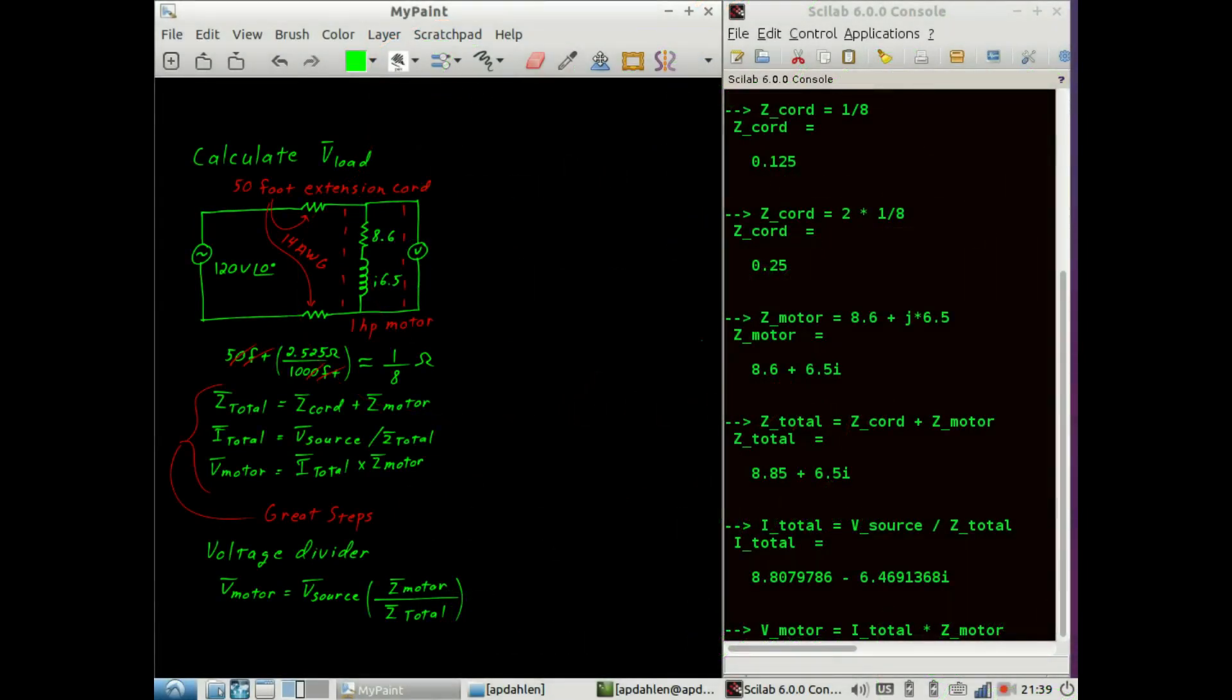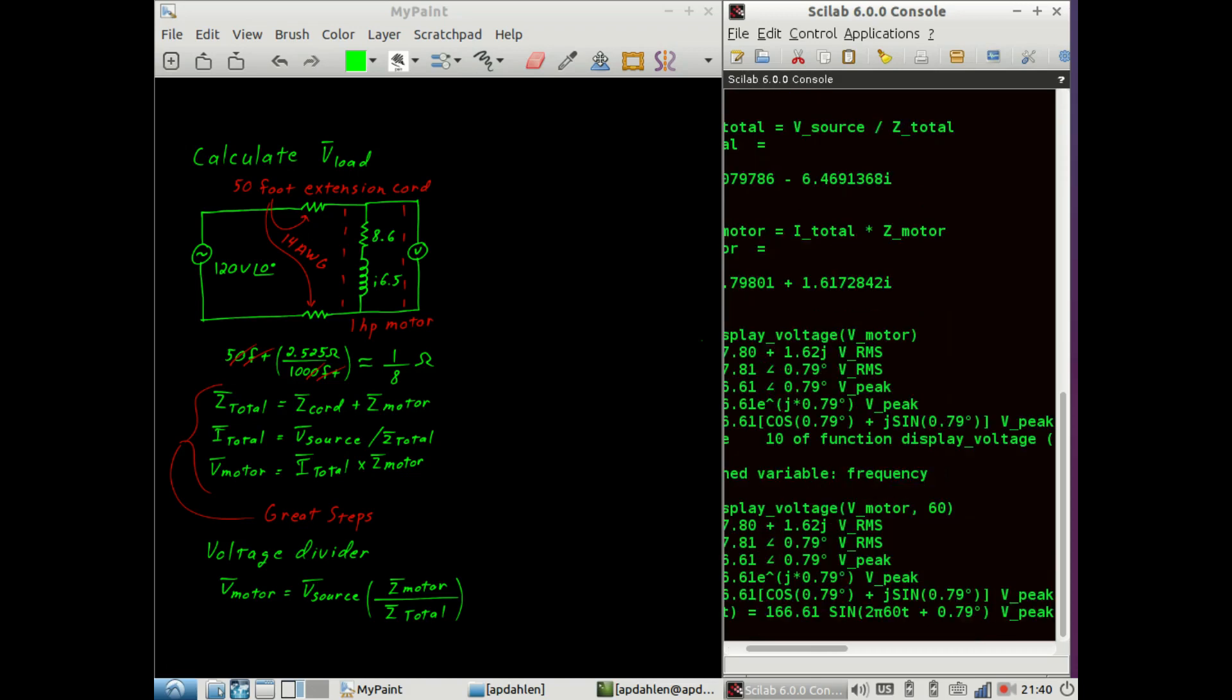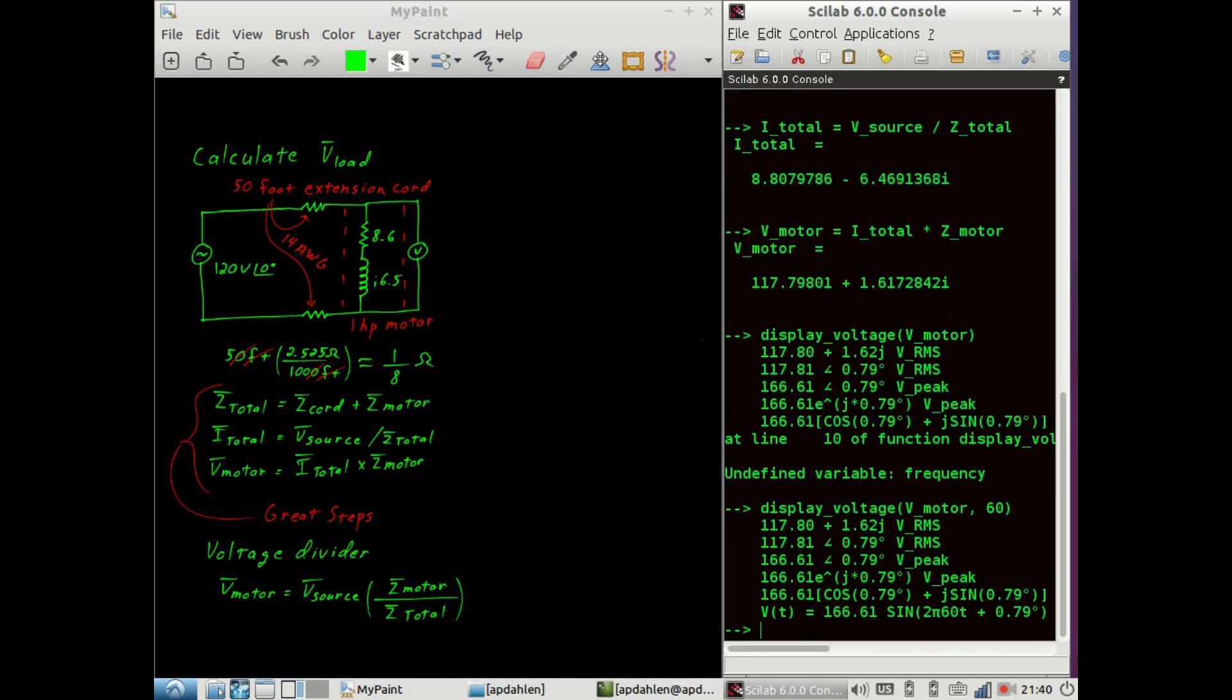And back to Scilab, display voltage is a function I built. It takes the voltage of the motor as a parameter. And when we do that, let's not forget the frequency. When we use this function we can see all the different ways to represent voltage. We've got an RMS voltage in rectangular form, an RMS voltage in polar form, a peak voltage in polar form. Then we have the complex exponentials, and finally the time domain representation.